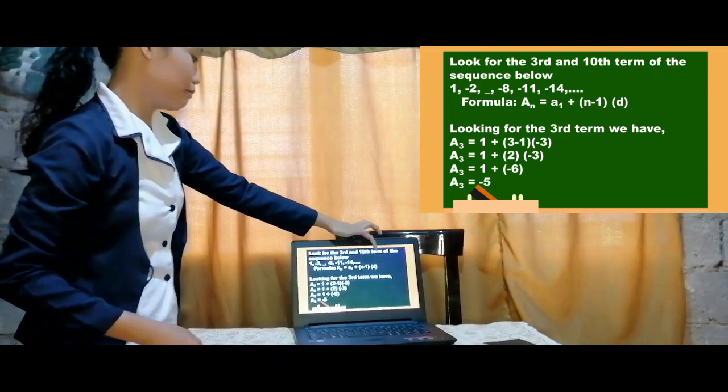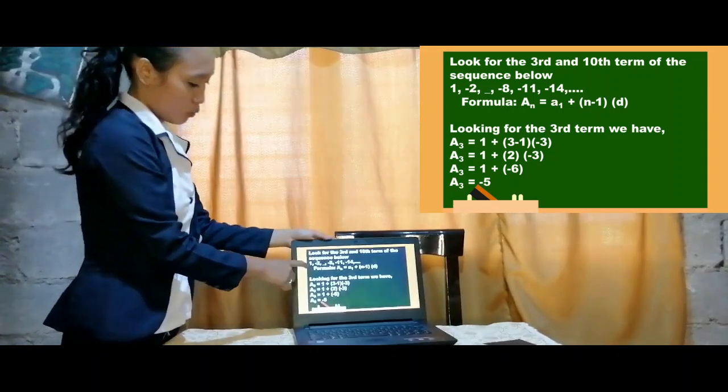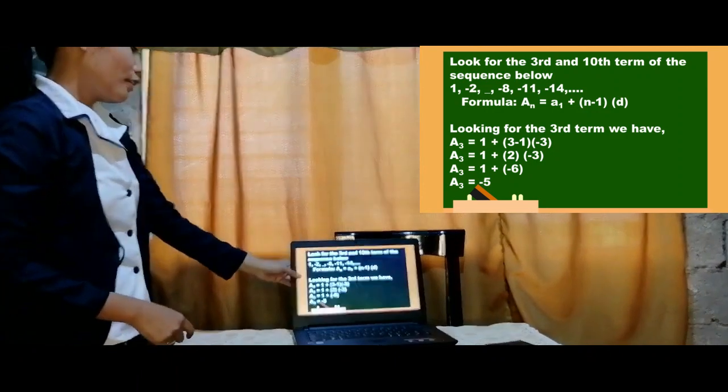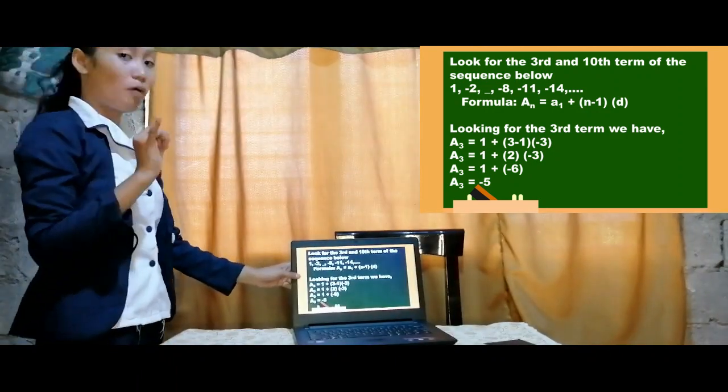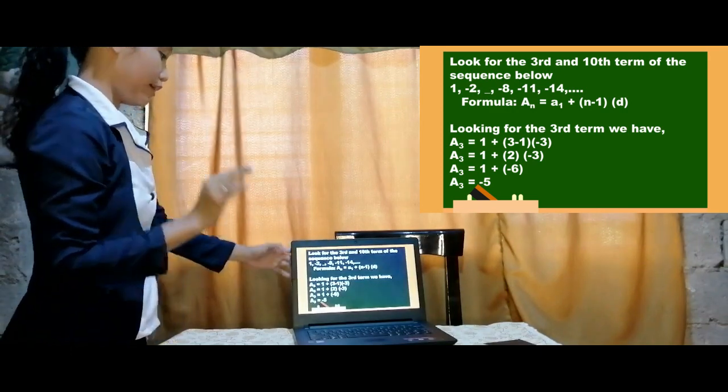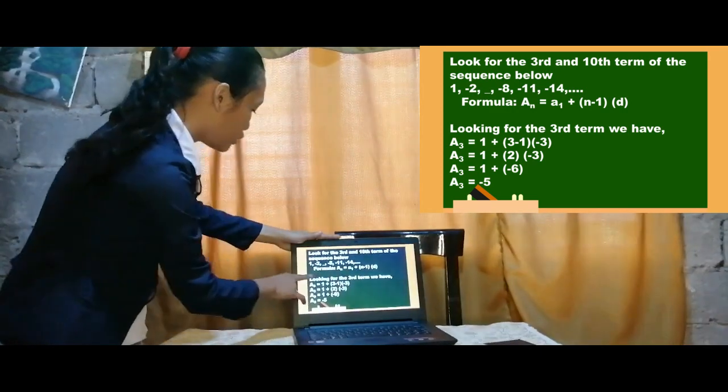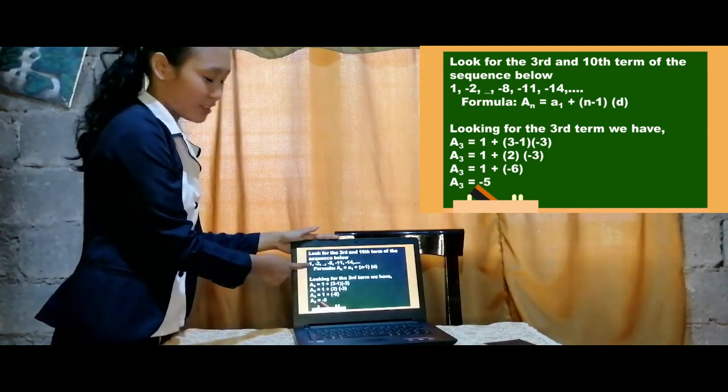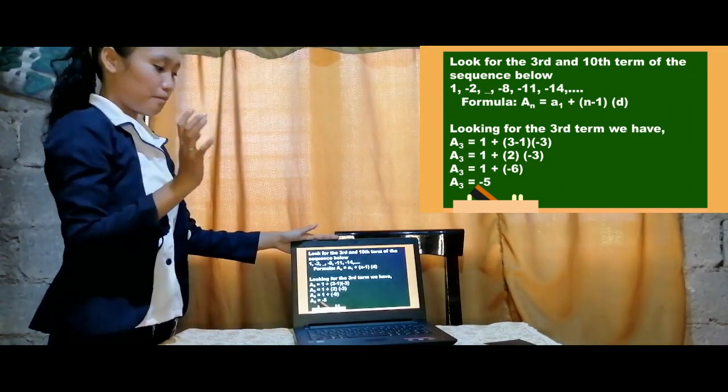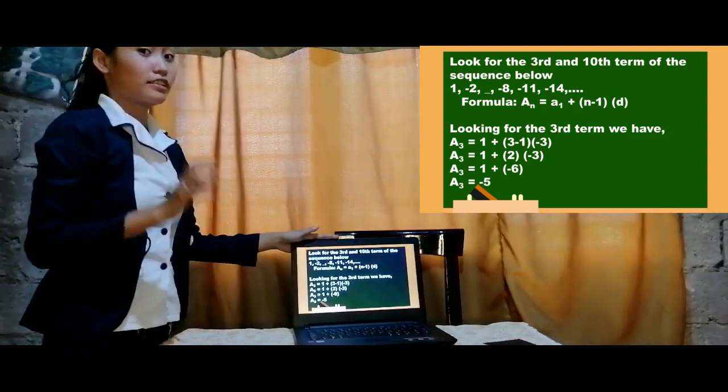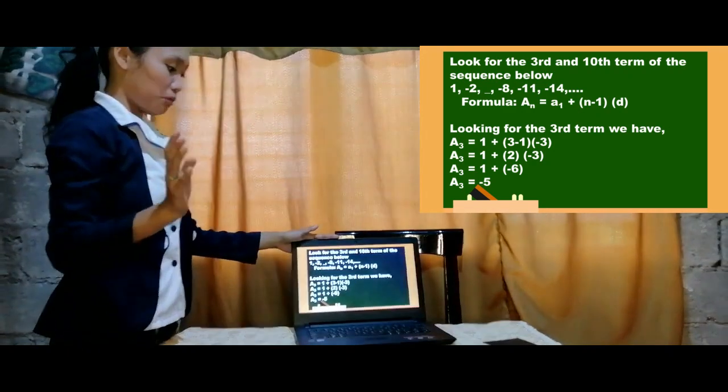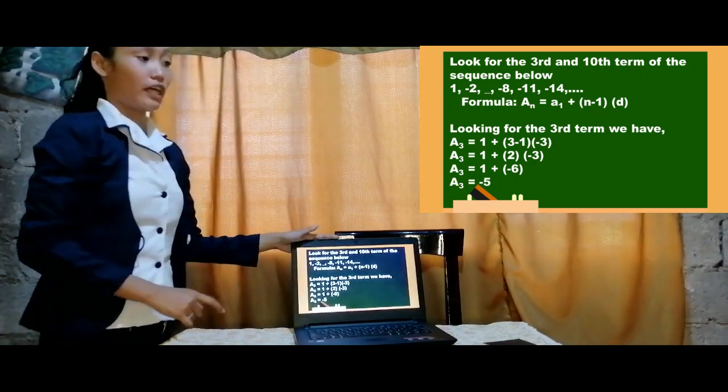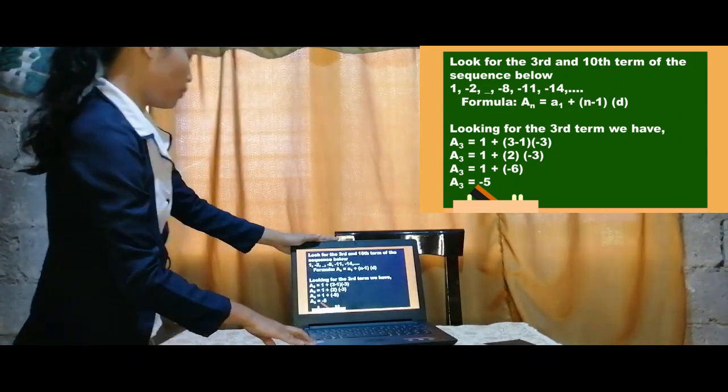Let's have an example on how to use the formula. Look for the 3rd and the 10th term of the sequence below. We have here the sequence 1, negative 2, blank, 8, 11, 14. First, let us identify what is the a sub 1, the n, and the common difference. What is a sub 1? So a sub 1 is the first term, so 1 is the a sub 1. Looking for the 3rd term, so n is equals to 3. Then what is d, the common difference? We just subtract: negative 2 minus 1 equals negative 3. So the common difference is negative 3.